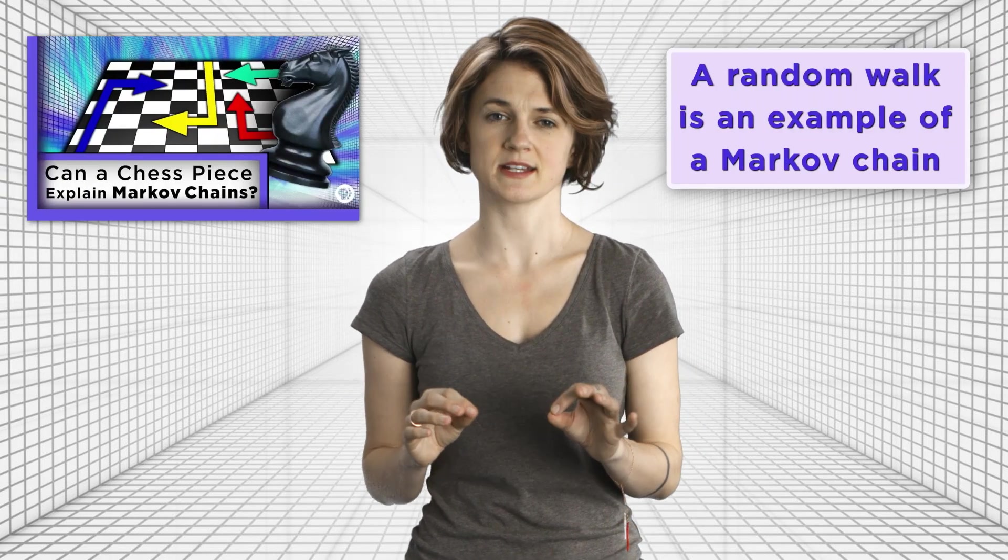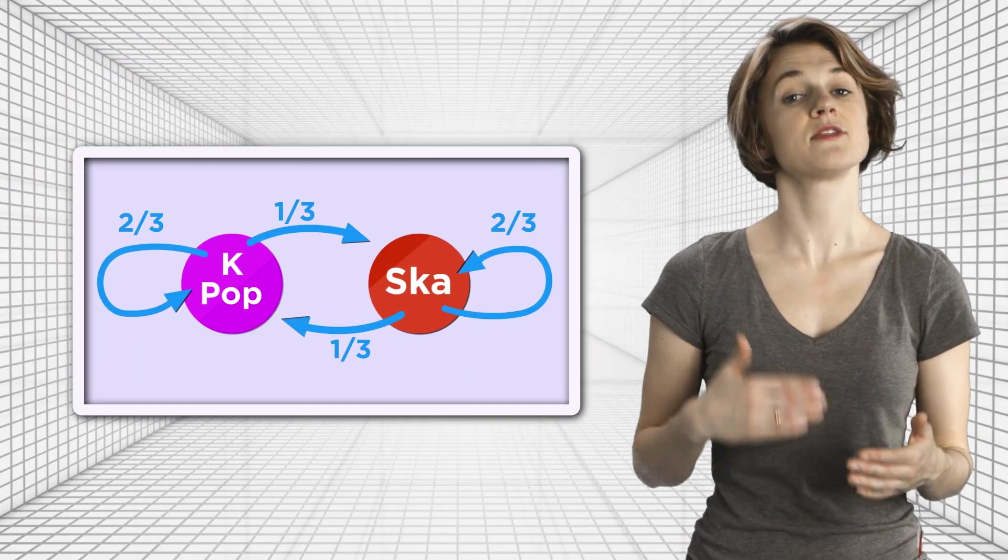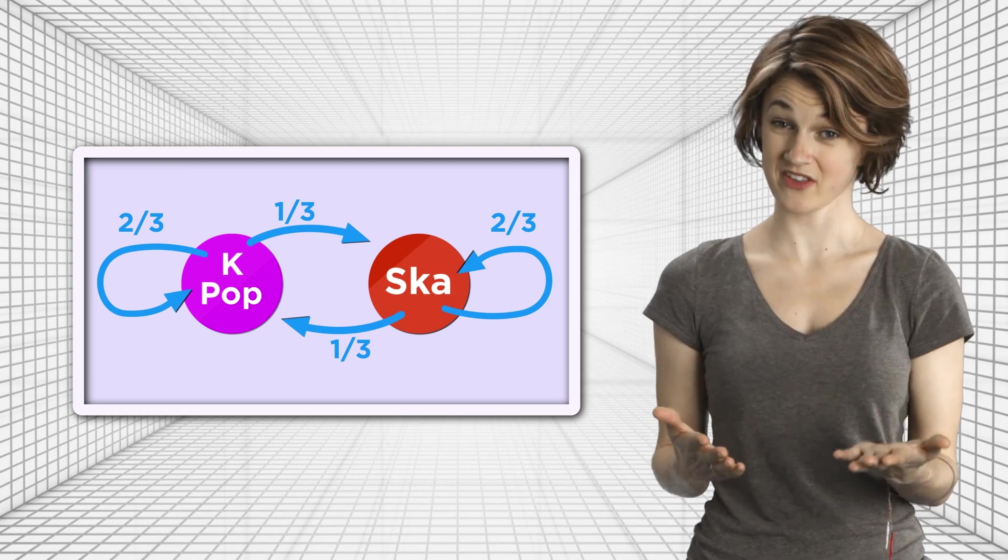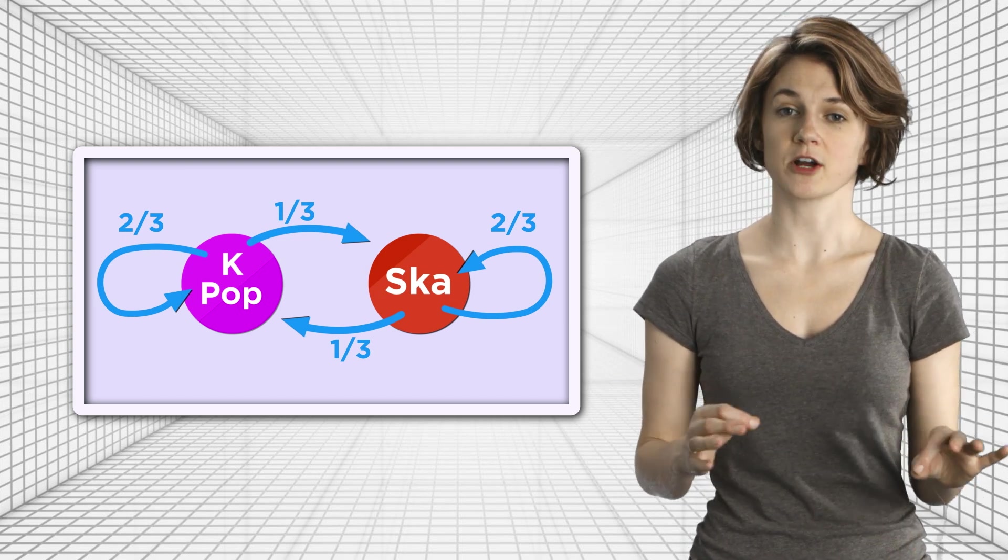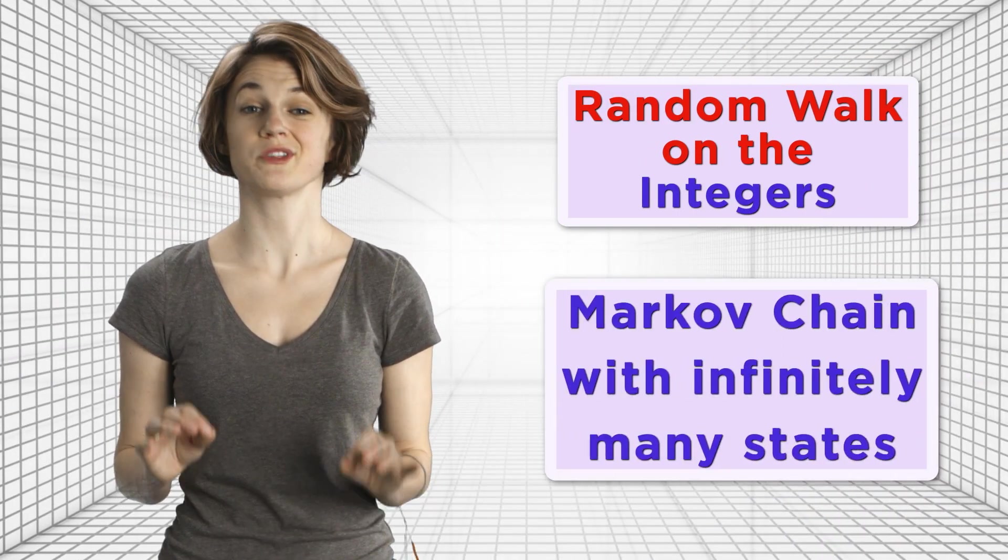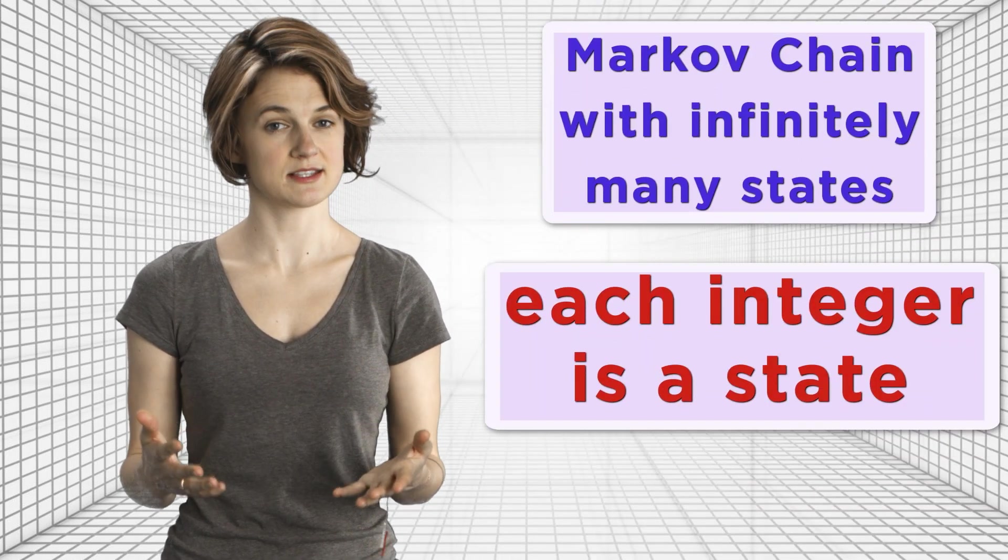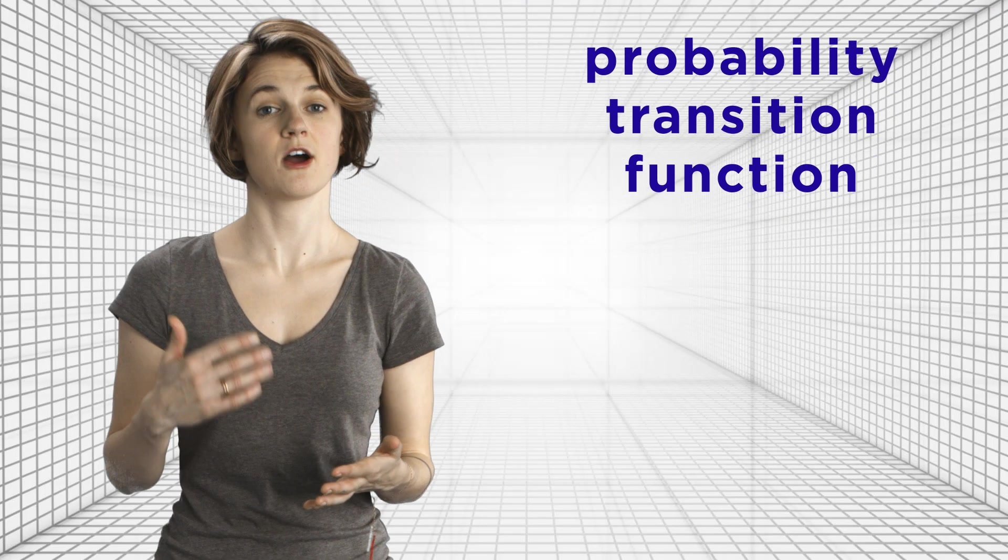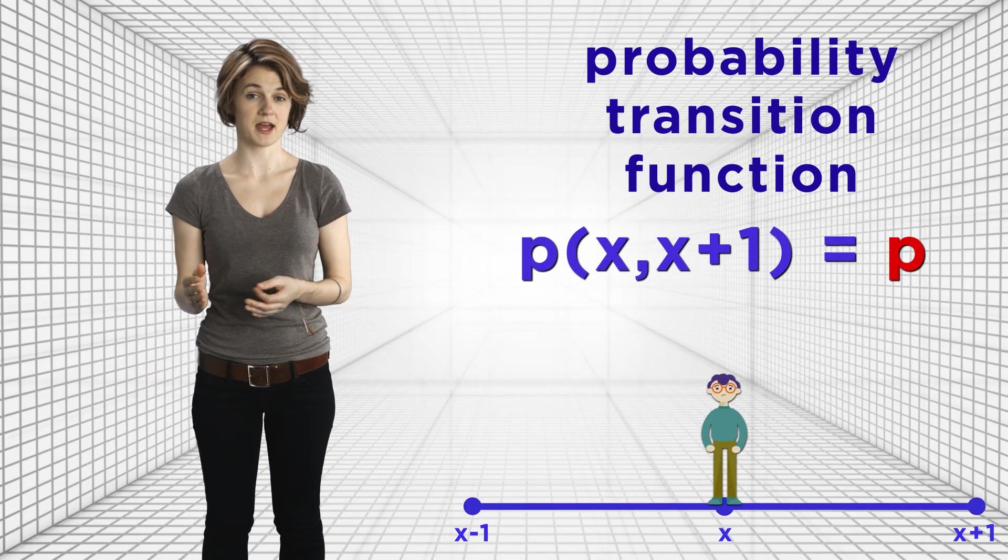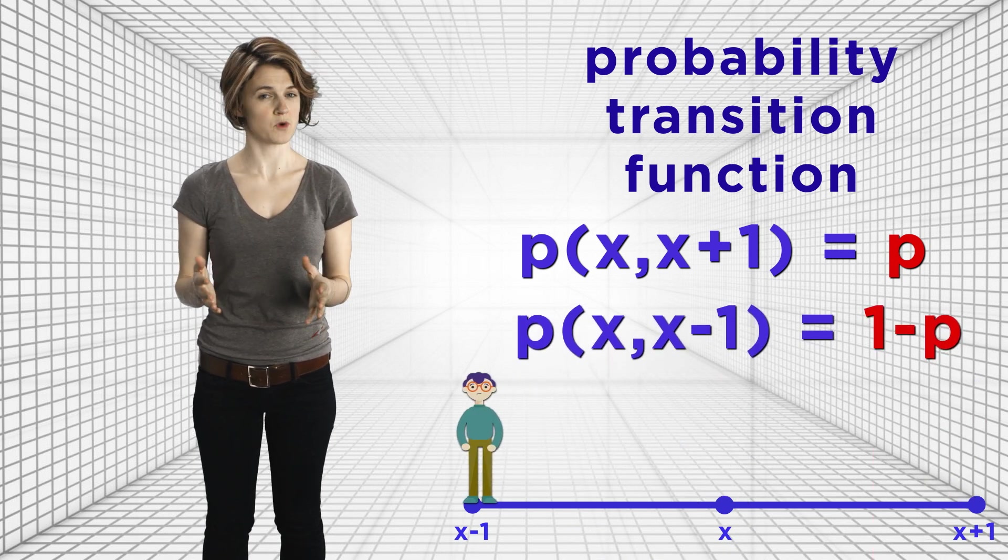The average speed at which it's moving, which is like n, and the speed at which it's fluctuating around that average, which is like the square root of n. I want to point out for folks who saw our episode on Markov chains that a random walk is an example of a Markov chain. Remember that a Markov chain was a set of states with arrows connecting them that told us how likely you are to jump from one state to another. In that episode, we only looked at Markov chains with finitely many states, but a random walk on the integers is an example of a Markov chain with infinitely many states. Each of the infinitely many integers is a state, and the probability transition functions are given by the equations: probability of jumping from x to x plus 1 equals p, and the probability of jumping from x to x minus 1 equals 1 minus p.